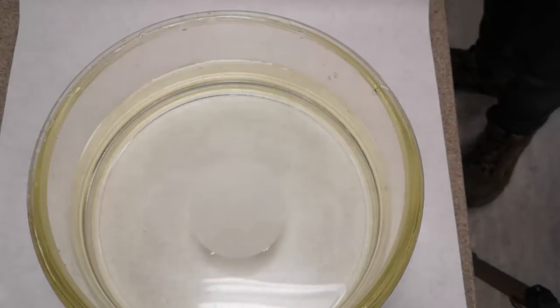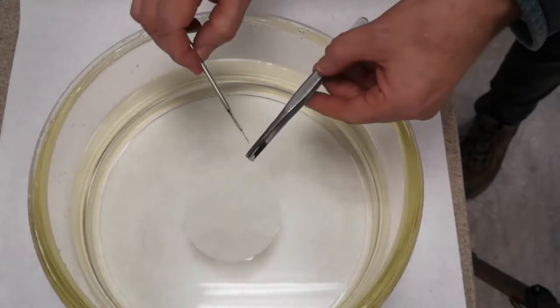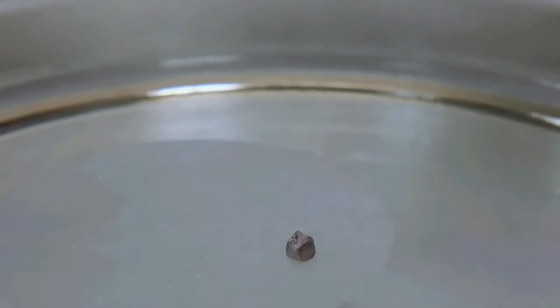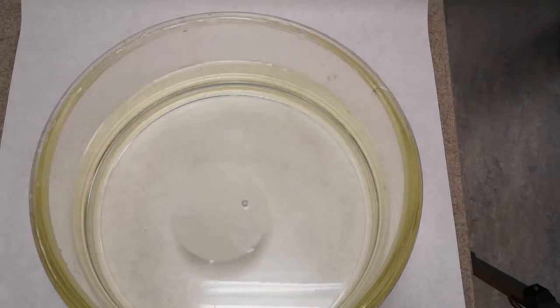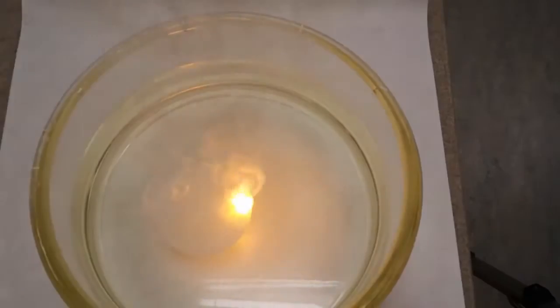A better way is to float a piece of filter paper on the surface of the water and put the sodium onto that. As you can see, it initially melts and then catches fire with the characteristic orange-yellow flame of sodium.